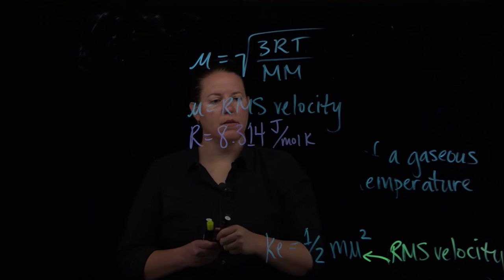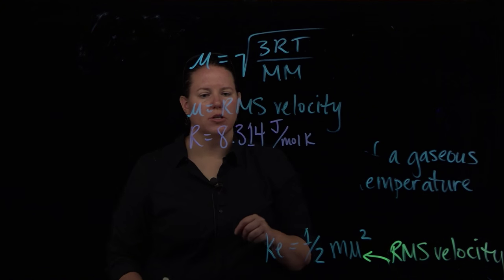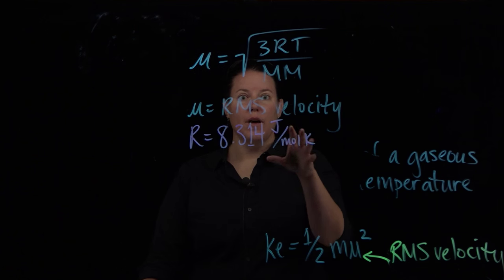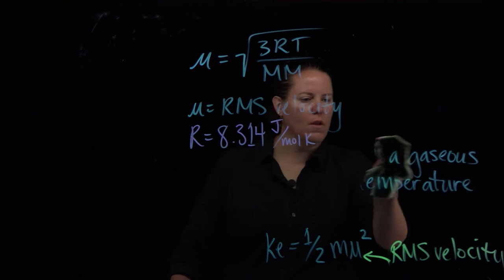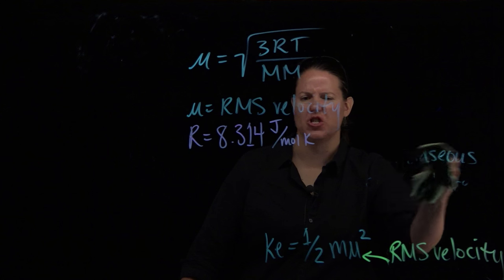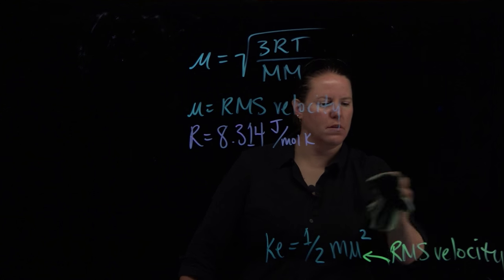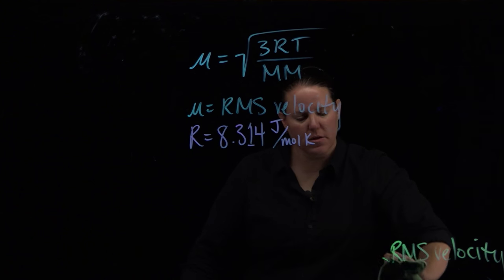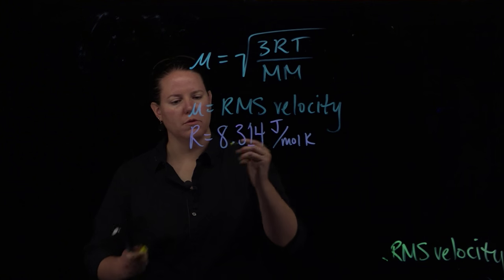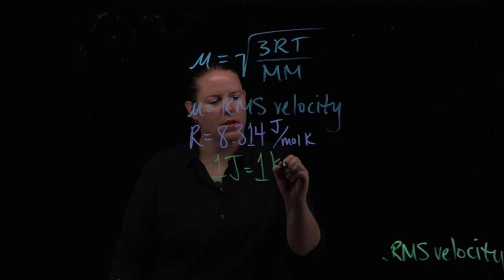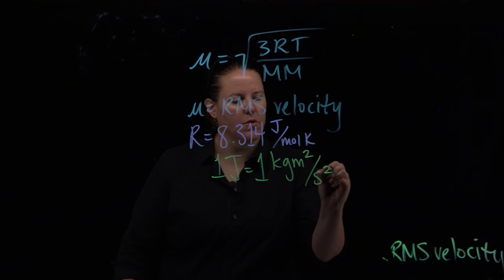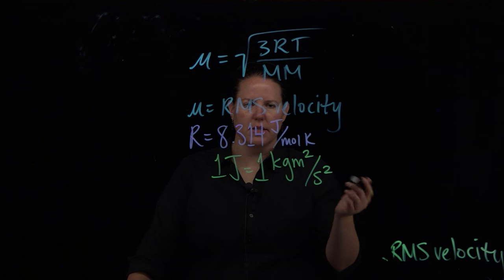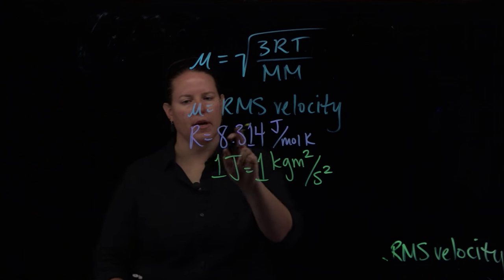This one is 8.314 joules per mole K. And what's interesting about that is that joules is actually a derived unit. And because it's a derived unit, we're actually going to need to take the derived version of joules and plug it in here. What is the derivation of joules? The derivation of joules is that in one joule, there is one kilogram meter squared per second squared.